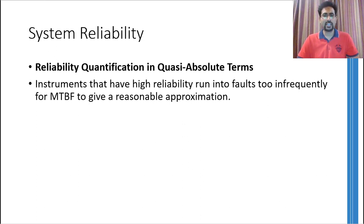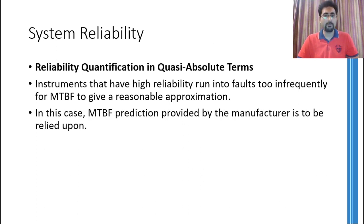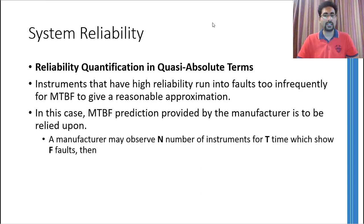But how can you do this exercise for equipment with a large mean time between failures? For example, there might be equipment that won't show any failure in complete 360 days. In such a case, you can't just wait for years and years to record failure data. For such instruments, you have to rely on the mean time between failure prediction provided by the manufacturer, who has observed multiple devices for a period of time — effectively observing one device for quite a long time.